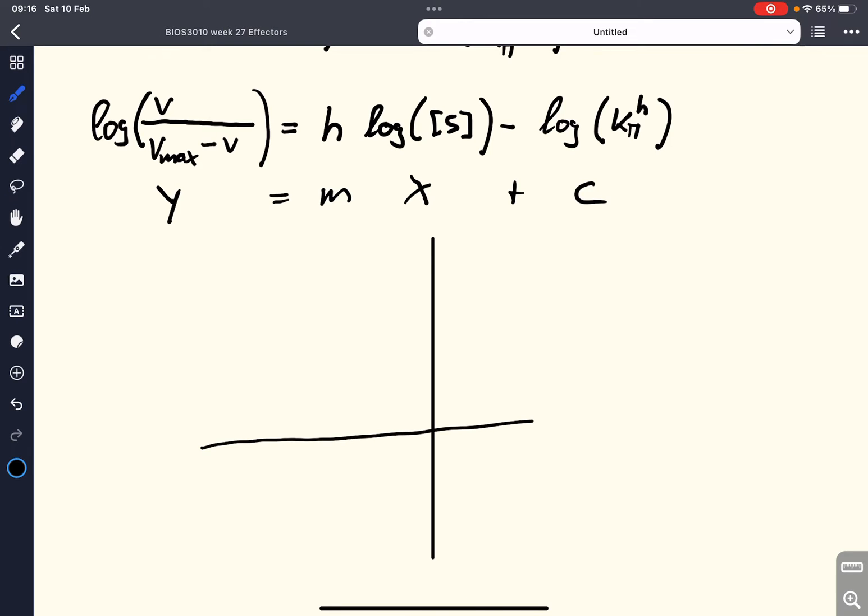So, what we can do is, we can plot on the X-axis log of the concentration of S, our substrate concentration. And on the Y-axis, we plot log of V divided by Vmax minus V.